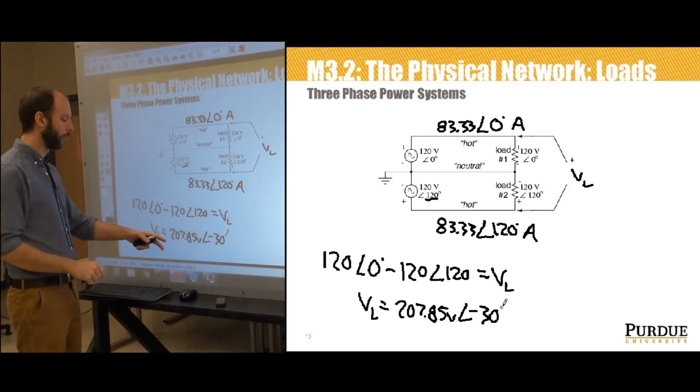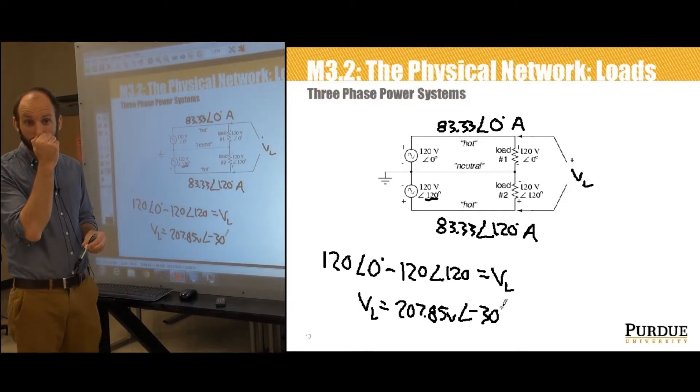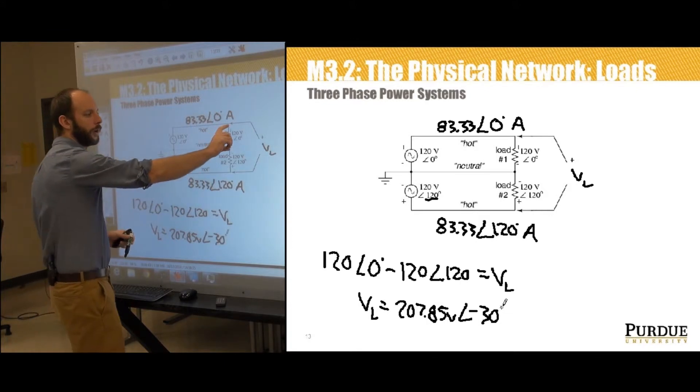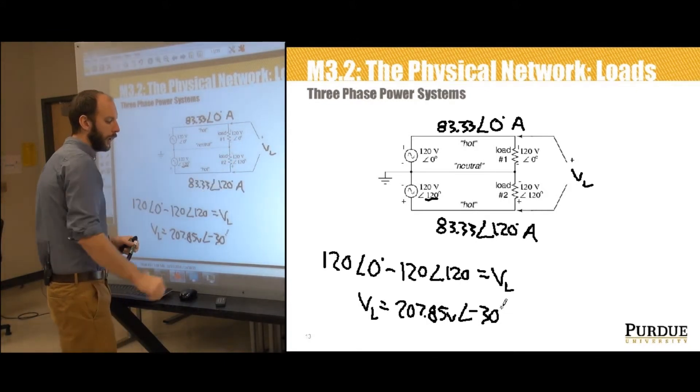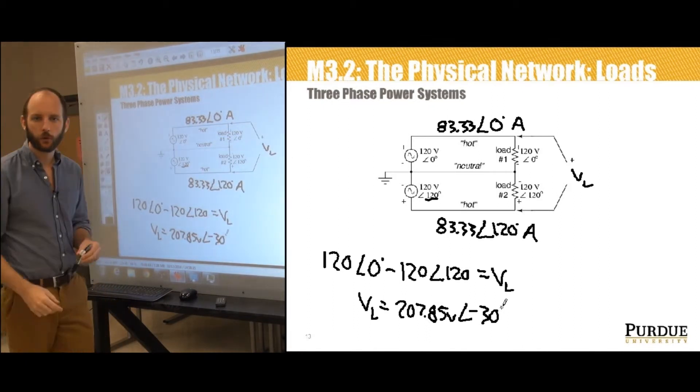So when those two voltage sources were in phase, we got 240 at an angle zero here, but put them 120 degrees out of phase and we see that the magnitude reduces and the phase angle is introduced. So we get 207.85 at an angle of negative 30. Typically, this is called 208, 208 volts. So if I put a load across here, I get 120 volts. If I put a load across here, I get 120 volts. If I put a load across here, I get 208 volts.